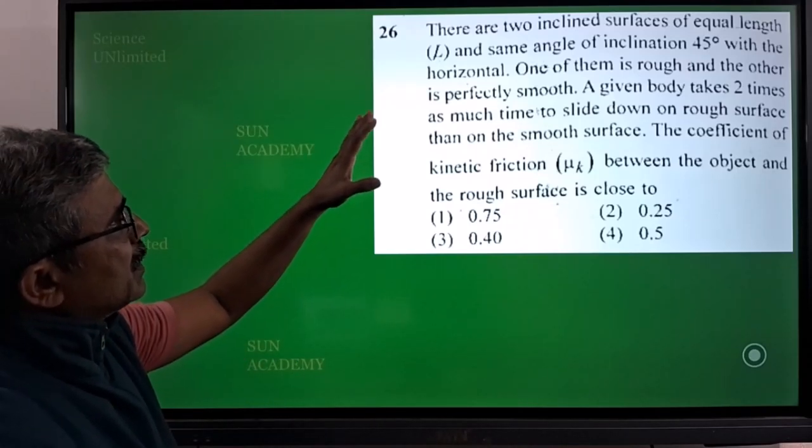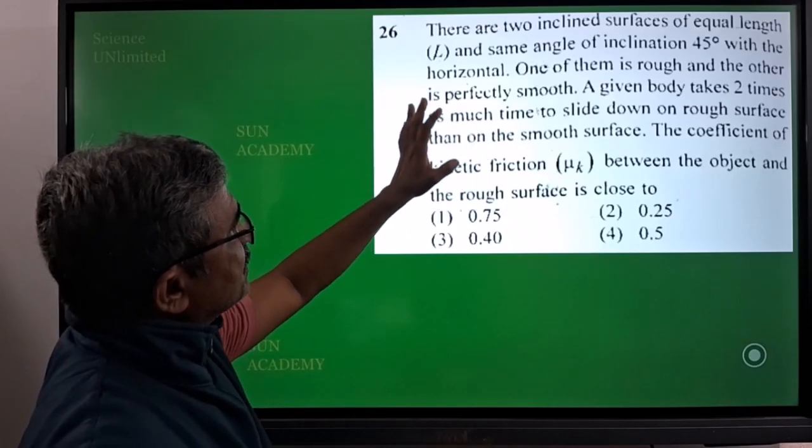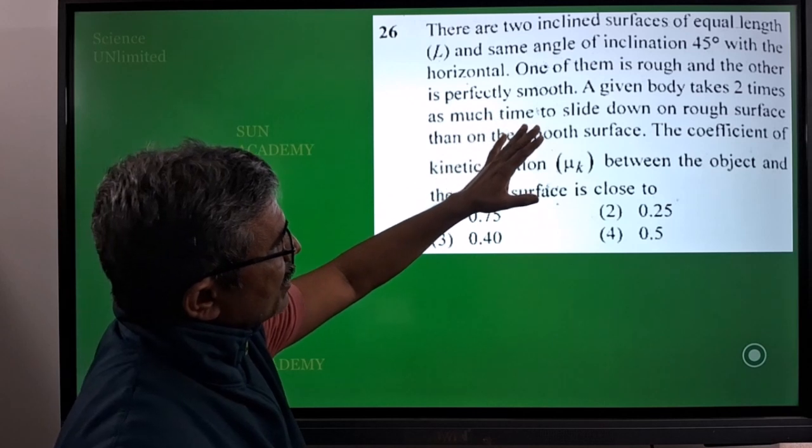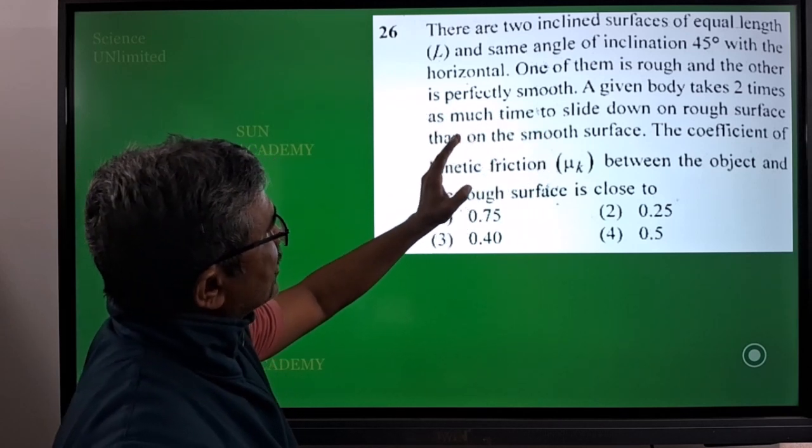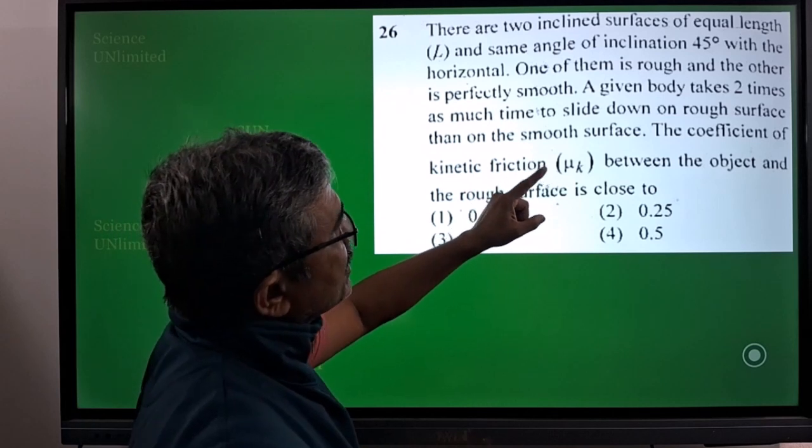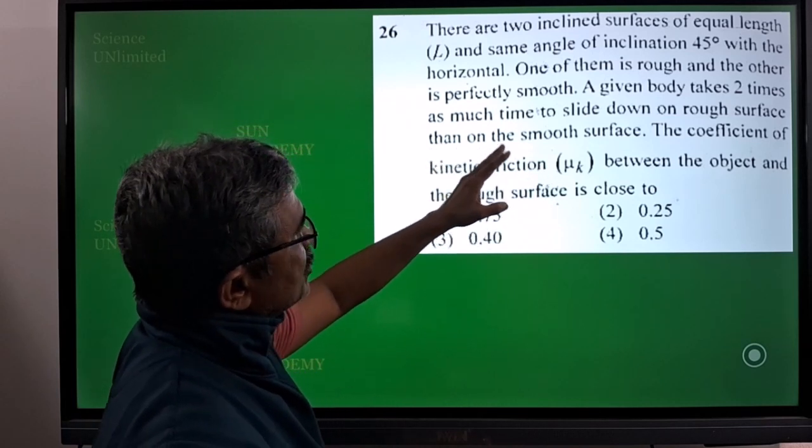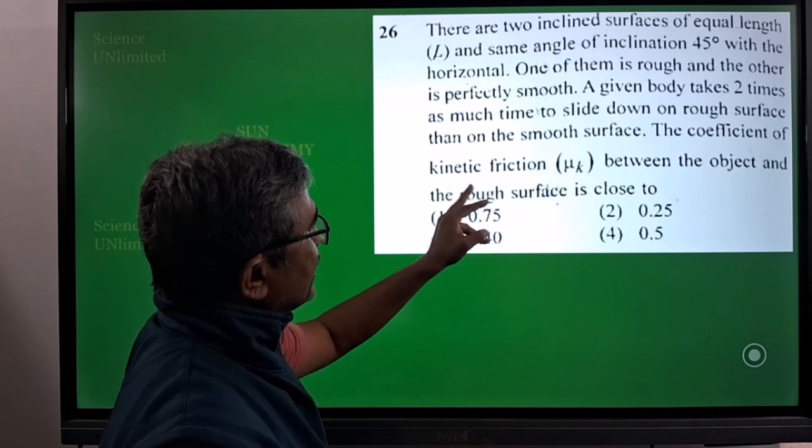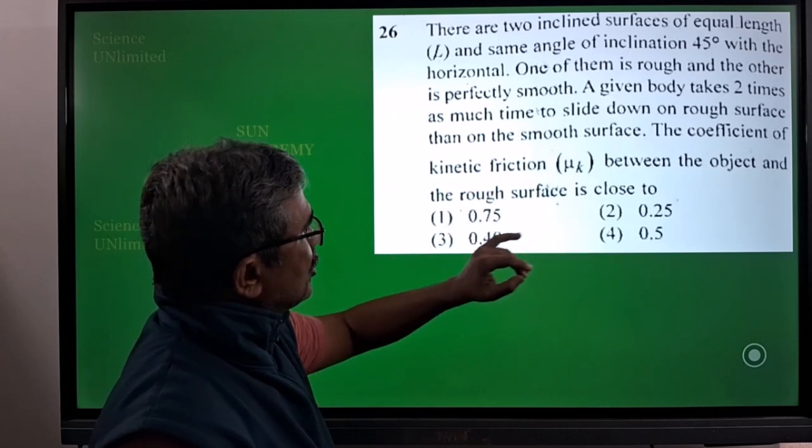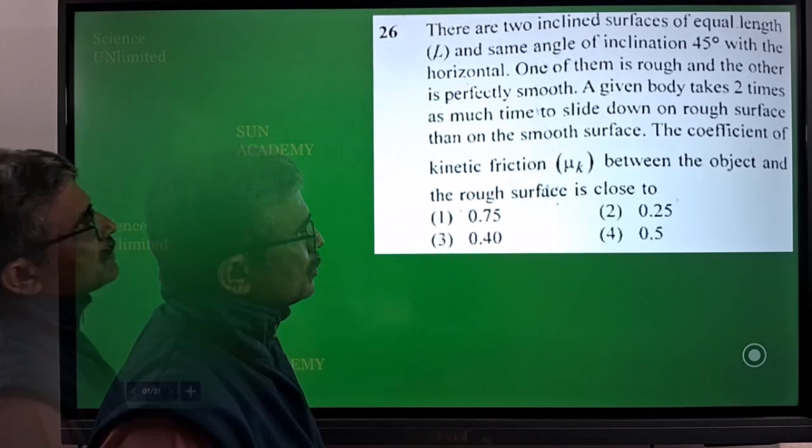Our next question is: there are two inclined surfaces of equal length L and the same angle of inclination 45 degrees with the horizontal. One of them is rough and the other is perfectly smooth. A given body takes two times as much time to slide down on rough surface than on the smooth surface. The coefficient of kinetic friction μk between the object and the rough surface is close to...